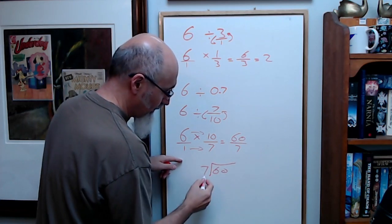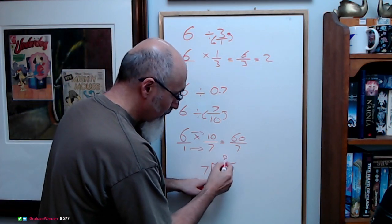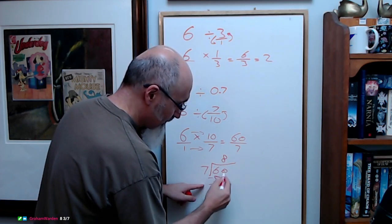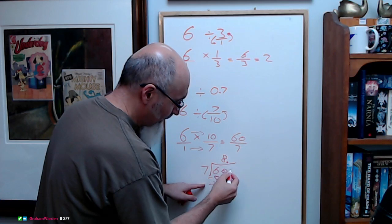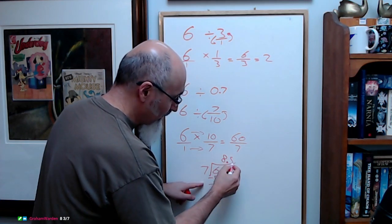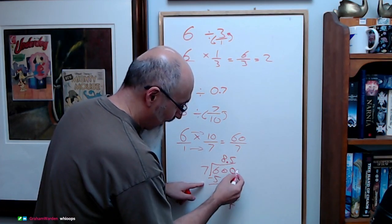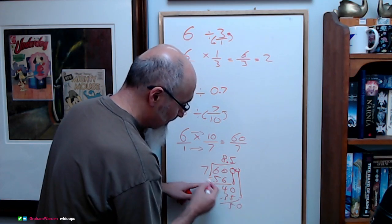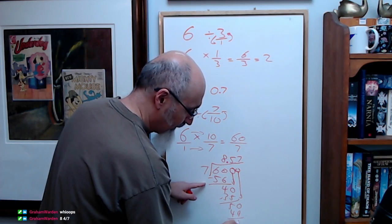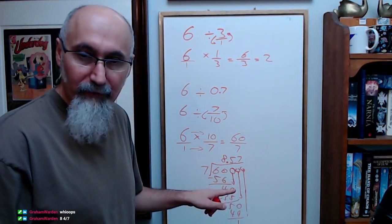7, 60. 7 doesn't go into 6, it goes into 60. How many times? It goes into it 8 times. 8 times 7 is 56. Subtract, you get 4. Well, now you add your 0, you add your decimal, bring the 0 down. 7 into 40 is 5. So that's 35. This becomes 5. You add another 0, bring it down. 7 into 50 is 7 times, which is 49. So that becomes 1. Bring down another 0, and so on and so forth.